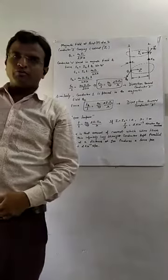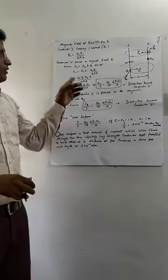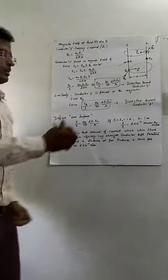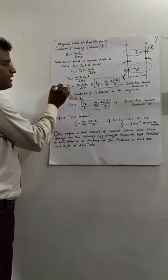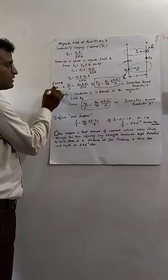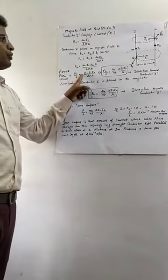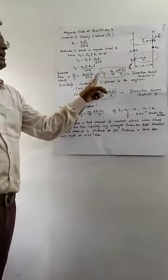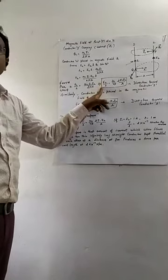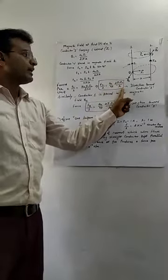Note that we calculate force per unit length, not the total force. The force per unit length is F2/L = μ₀I1I2 / 2πr, or equivalently (μ₀/4π)(2I1I2/r).